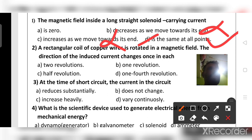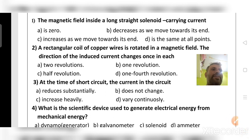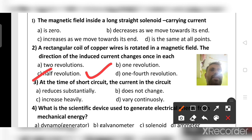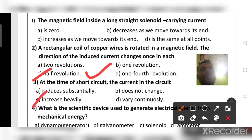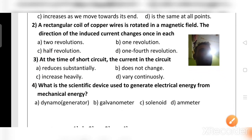A rectangular coil of copper wire is rotated in a magnetic field. The direction of induced current changes once in each half revolution. At the time of a short circuit, the current in the circuit increases heavily — that is the right answer.